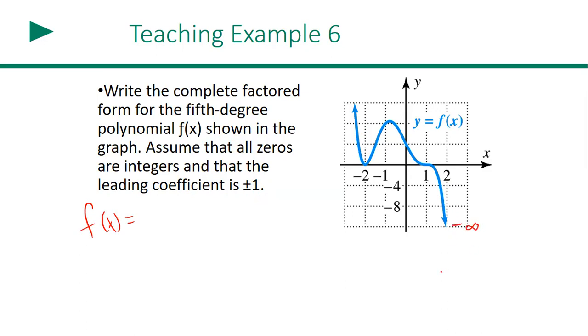Negative infinity, right? It ends heading towards negative infinity. So that means our leading coefficient is a negative. Does that make sense? Your right side determines your behavior. Now we're going to do our factors based on our factor theorem. So the factor theorem tells you that your factors come from your x-intercepts, correct?